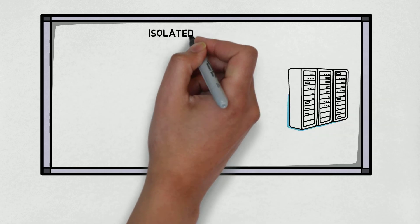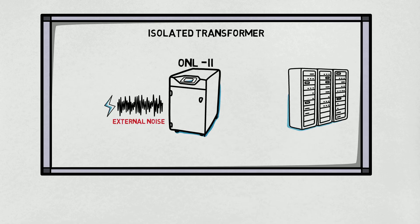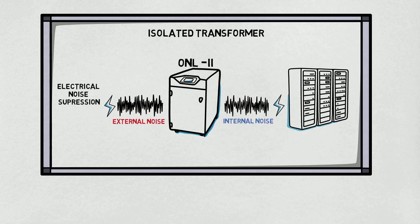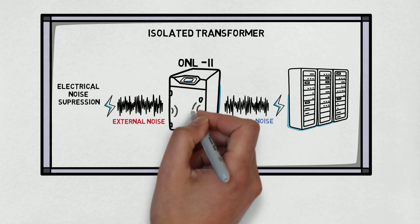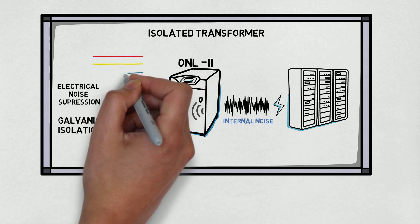Lastly, isolated transformer. Some industrial environments have heavy electrical noise. Therefore, certain three-phase UPS has a built-in isolated transformer to suppress electrical noise, forming what is called galvanic isolation, where voltage has no direct contact.